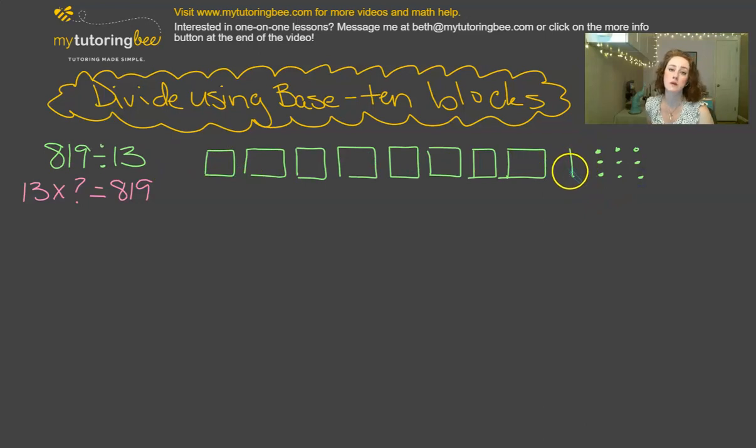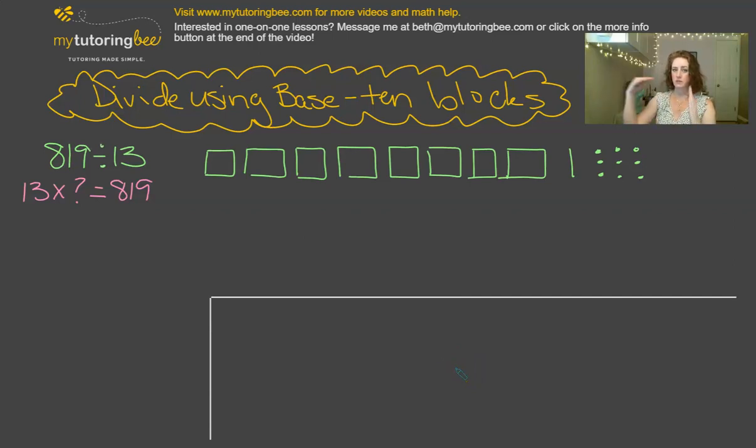Okay, so now we have this 819, and the goal of this process is to take all of this 819 base-10 blocks and separate them out in a way, reorganize them in a way that's related to 13. And again, what I want you to keep in mind is that thought of 13 times what equals 819. So let's set up our area down here. I like to just put a little rectangle. Some students I've seen don't use the rectangle. I like it just because it kind of separates the numbers that we are multiplying and the 819 that goes inside. So our 13 is our divisor, right? That's what we're dividing by. So I'm going to set that up over here on the left-hand side. So I need 1 ten and 3 ones to represent my 13.